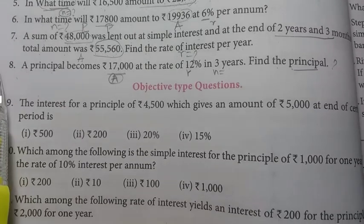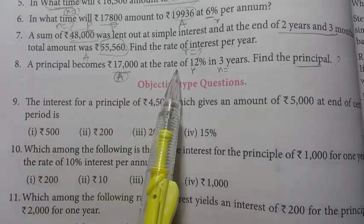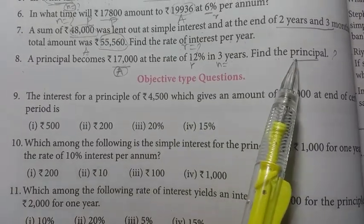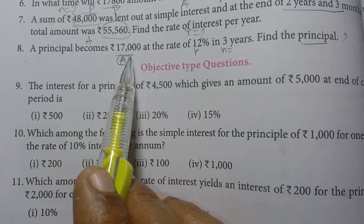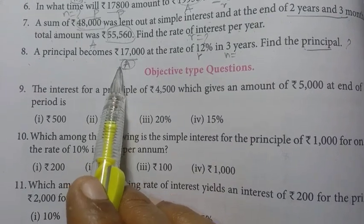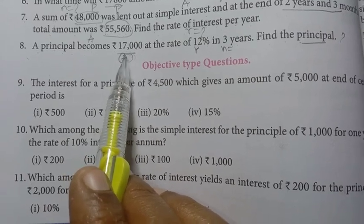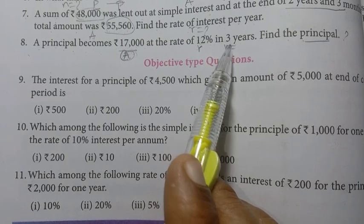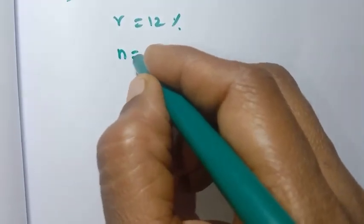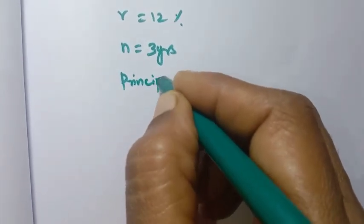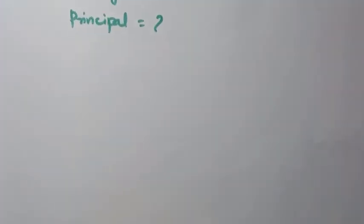The 8th sum: A principal becomes Rs.17,000 at the rate of 12% in 3 years. Find the principal. So amount A equals Rs.17,000, rate of interest R = 12%, number of years N = 3. We need to find principal P.